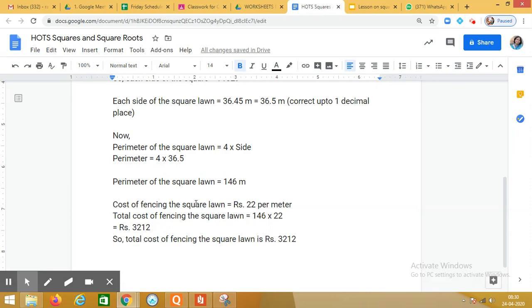Now tell me how will you find the cost of fencing the square lawn? It is given that it is rupees 22 per meter and total perimeter is 146 meters. So the total cost of fencing the square lawn is 146 into 22, which gives us 3,212 rupees. So this is how we have solved this particular question.